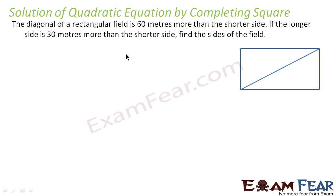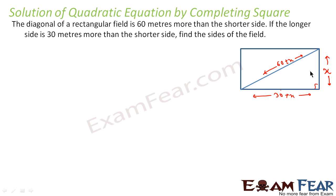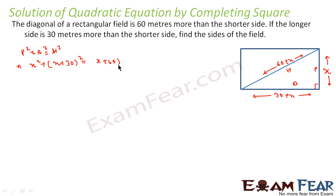Let us solve one more question. The diagonal of a rectangular field is 60 meters more than the shorter side. Let the shorter side be x meters. The diagonal is then x + 60, and the longer side is 30 more than the shorter side, so it is x + 30. This is a right triangle, so we apply the Pythagorean theorem: p² + b² = h².